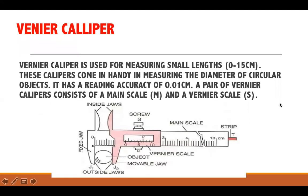The Vernier caliper is used to measure small lengths — from zero to 15 centimeters. It comes in handy for measuring the diameters of circular objects. You can use it to find either the internal diameter or external diameter of a cylinder. The reading accuracy of the Vernier caliper is 0.01 centimeter.